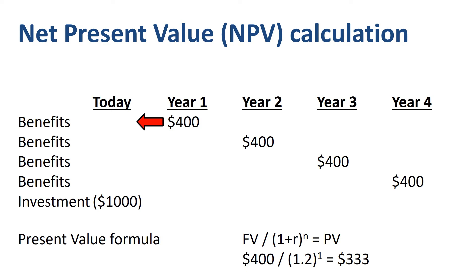1 plus 20% equals 1.2. The present value of a nominal amount of $400 one year from now is $400 divided by 1.2, which equals $333 in today's equivalent.